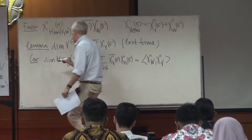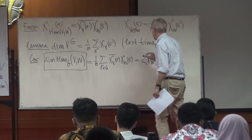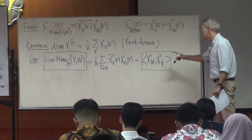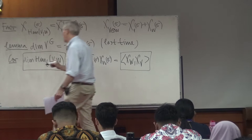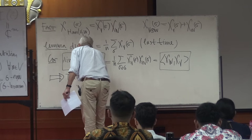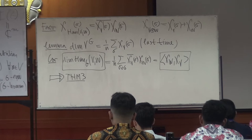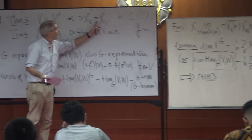We have a formula that expresses the dimension of the space of G-invariant functions in terms of the characters. So if you know the characters of a representation, even if you don't know the representation itself, you can compute these dimensions. This immediately implies Theorem 3. Theorem 3 says that if two representations are isomorphic, the characters are the same — that direction is trivial — but the converse is interesting: if the characters are the same, then the representations are isomorphic.